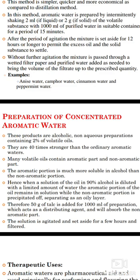Many volatile oils contain an aromatic part and a non-aromatic part. The aromatic portion is much more soluble in alcohol than the non-aromatic portion. When a solution of the oil in 90 percent alcohol is diluted with a limited amount of water, the aromatic portion remains in solution while the non-aromatic portion is precipitated or separates as an oily layer. Therefore, 50 grams of talc is added per 1000 ml of preparation, which acts as a distributing agent and absorbs the non-aromatic part. The solution is agitated, set aside for a few hours, and then filtered.